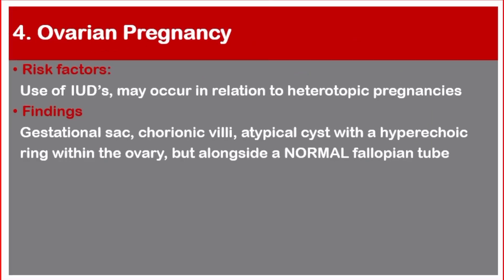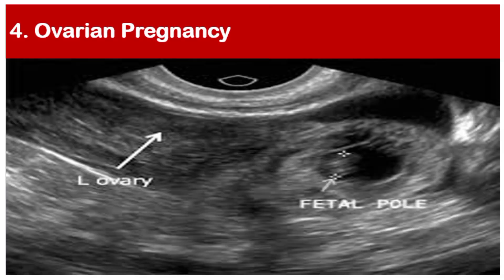Number four: ovarian pregnancy. Risk factors include the use of intrauterine devices and may occur in relation to heterotopic pregnancies. Findings: gestational sac with chorionic villi — an atypical cyst with a hyperechoic ring within the ovary, but alongside a normal fallopian tube.